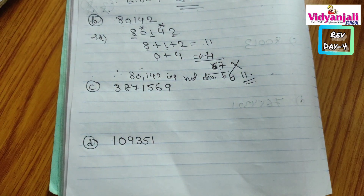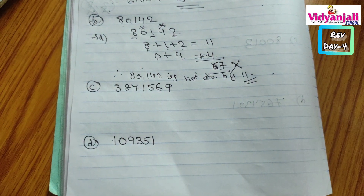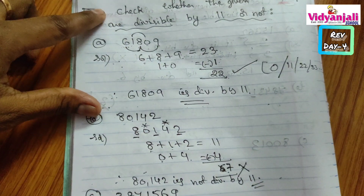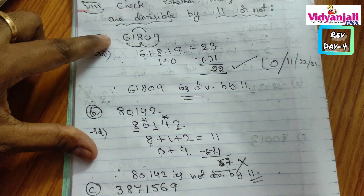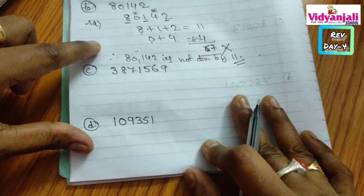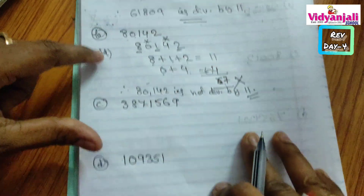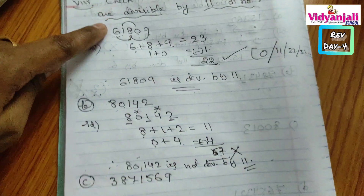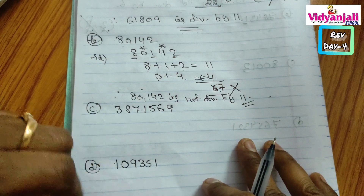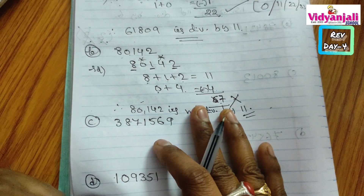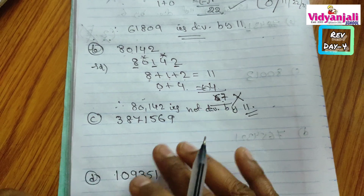Children, in today's session we covered almost all the divisibility rules. Whatever problems I explained, along with the extra additional questions — every problem you practice in today's homework with today's date and keep the heading: Home Assessment 2, Revision Day 4. Thank you.